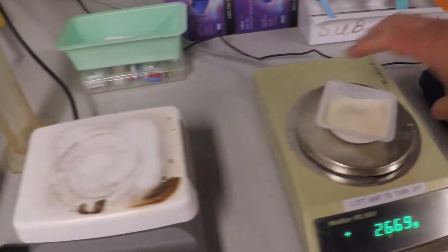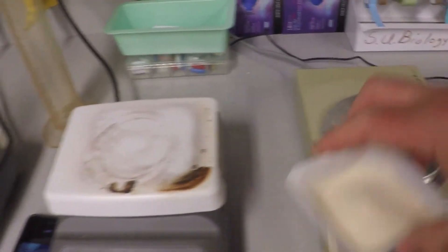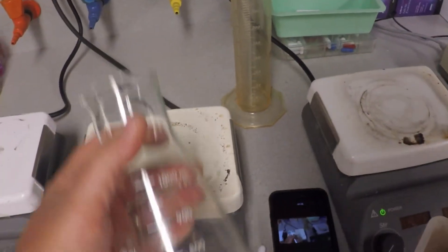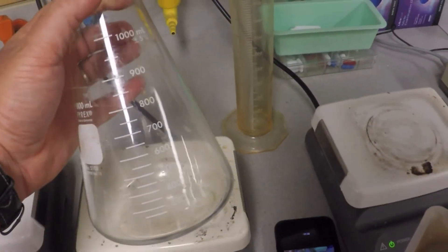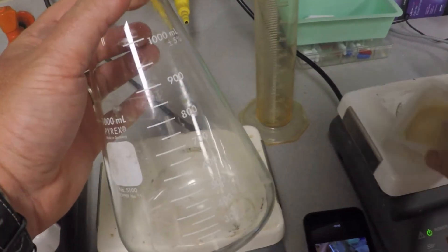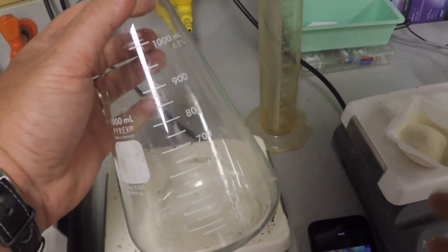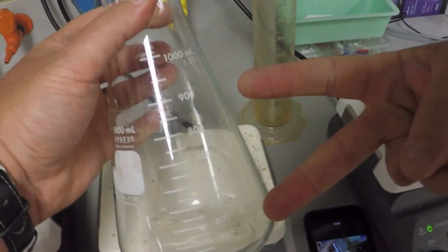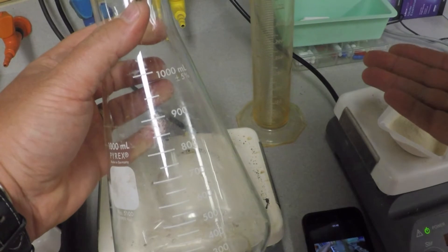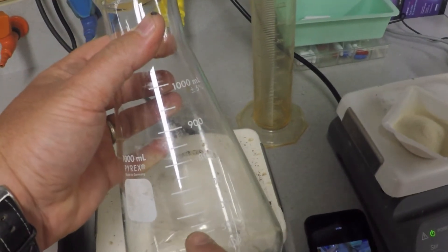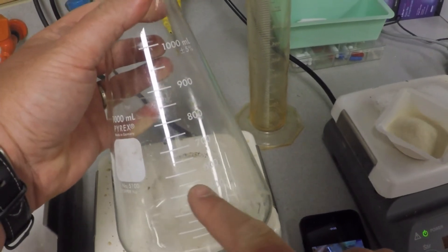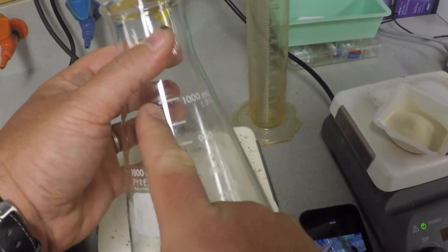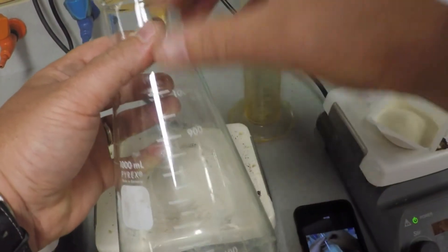Now you need a nice flask. I'm using a one liter Erlenmeyer flask to put this in. I'm making 500 mils of media overall. What you want to do is always use a volume of flask that's twice as big as the final volume you're going to make, because when it's in the autoclave under heat and pressure, it'll likely bubble over the top.